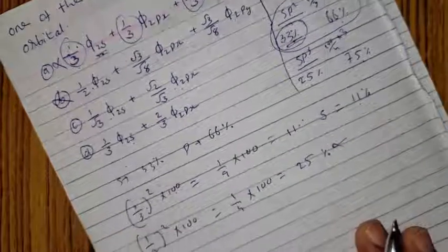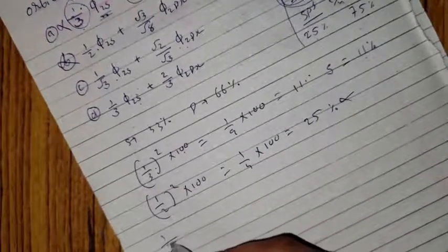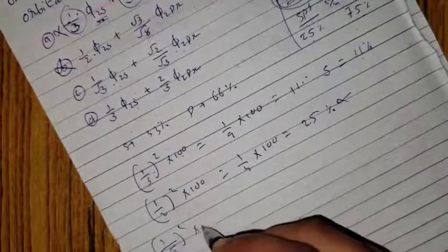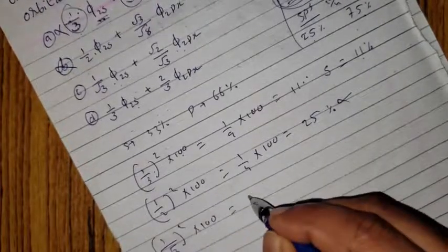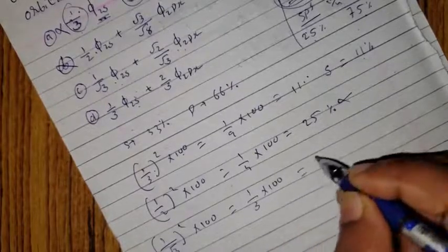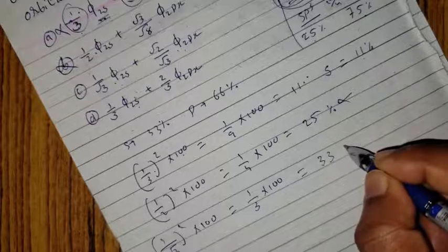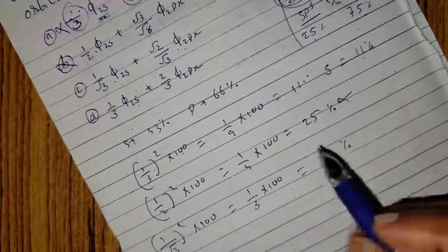Third option: 1 by root 3. 1 squared into 100, 1 by 3 into 100, approximately 33.33 percentage S character.